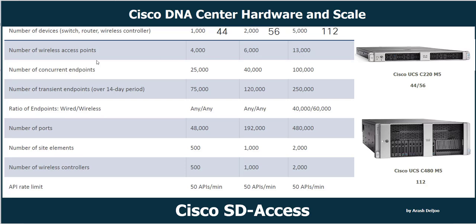Number of concurrent endpoints: 25,000 / 40,000 / 100,000. Number of transient endpoints: 55,000 / 120,000 / 250,000. Number of ports supported: 48,000 / 192,000 / 480,000. Number of site elements: 500 for entry level, 1,000 for mid-size, and 2,000 for large. Number of wireless controllers: 500 / 500 / 2,000. API rate limit: 50 APIs per minute, supported across all sizes. This table will be useful when ordering one of these scales.